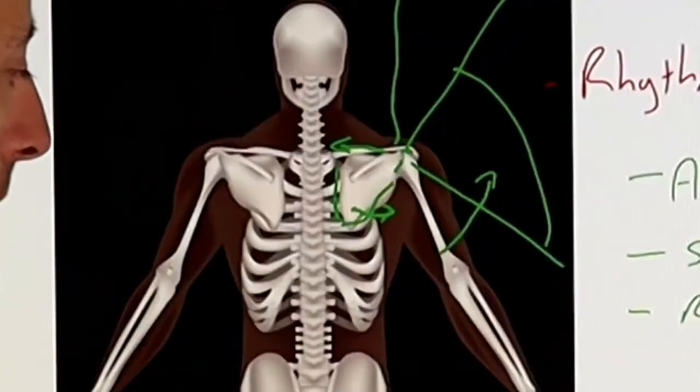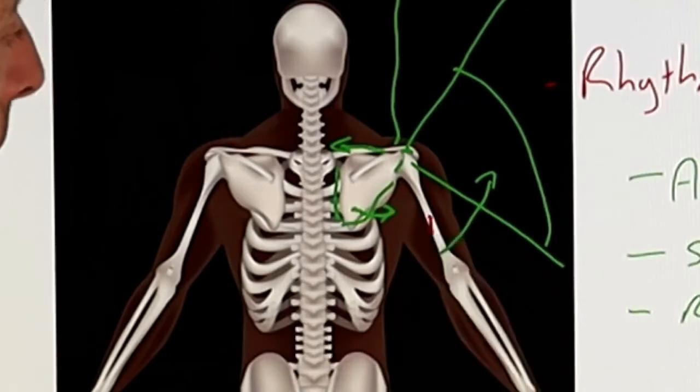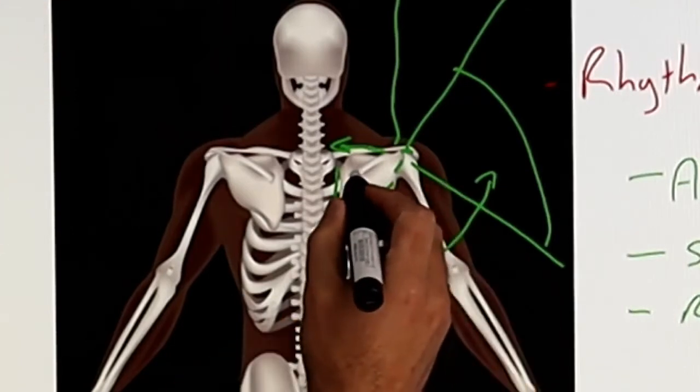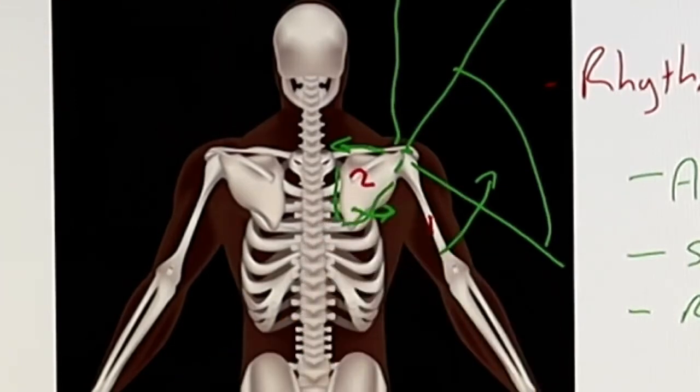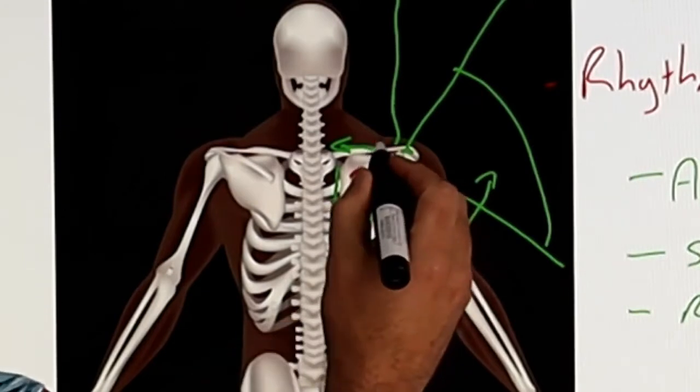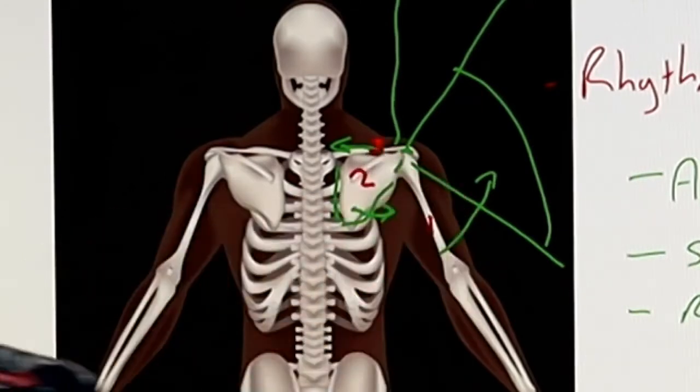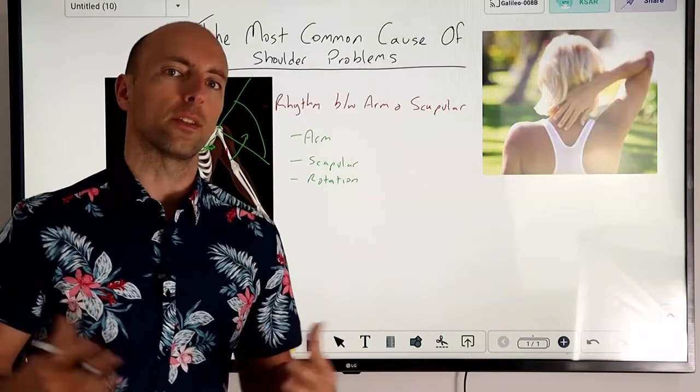We have this really complicated movement where in step one we first move our arm itself, step two we have this combined movement with the shoulder blade, and step three we then have movement with the clavicle or the collarbone to get it out of the way.